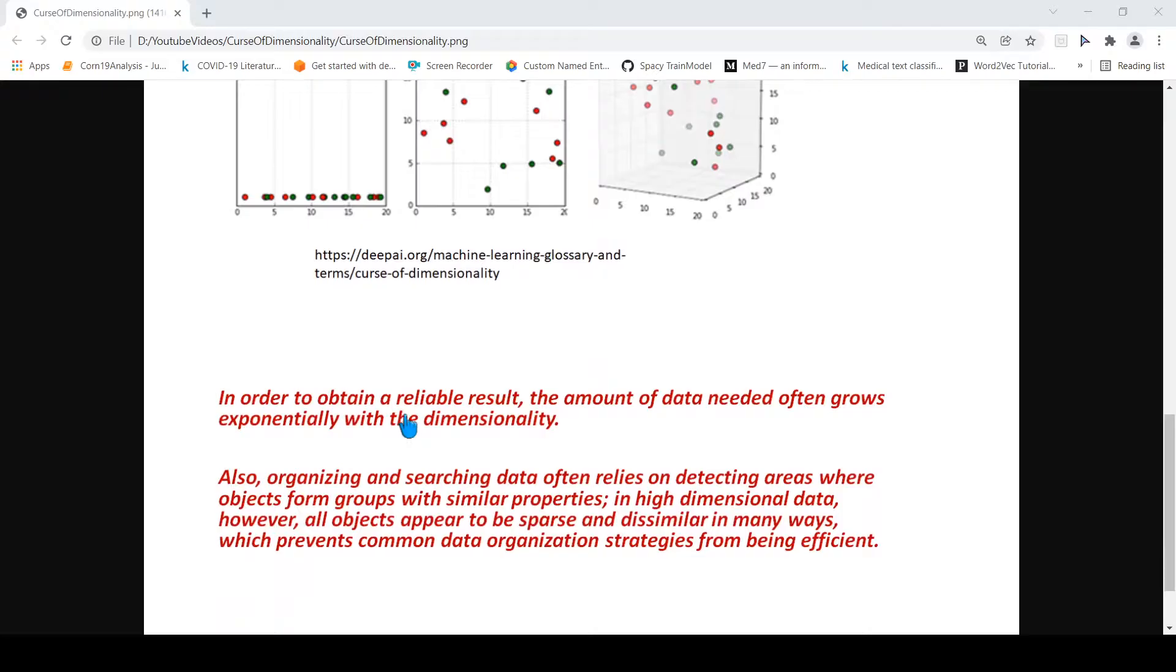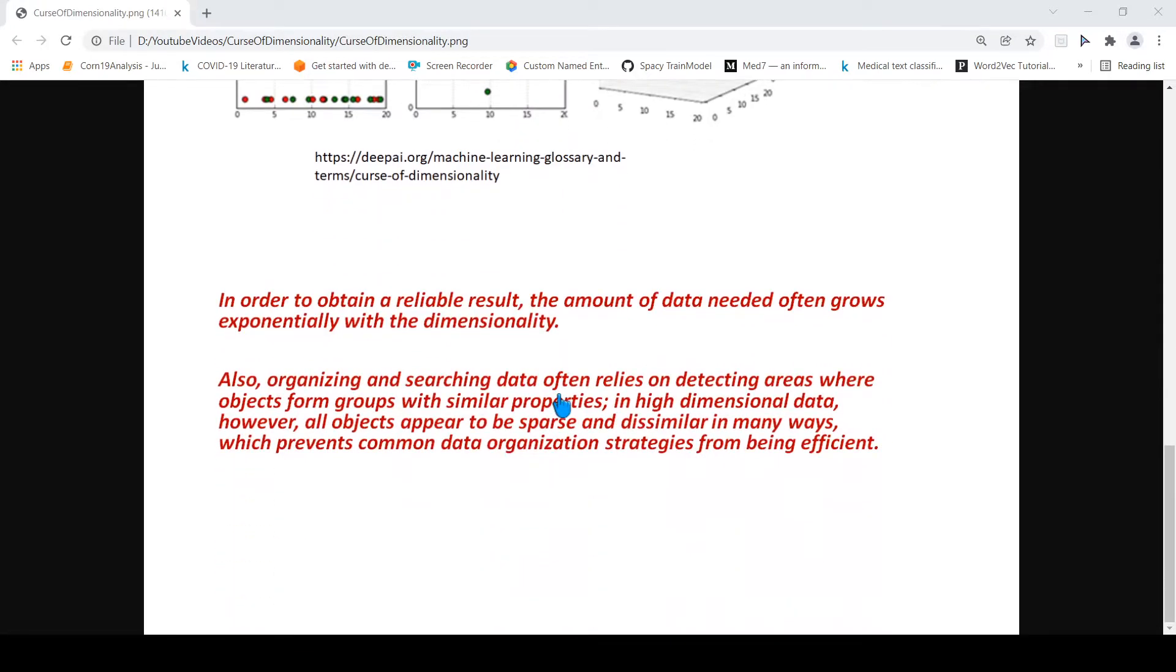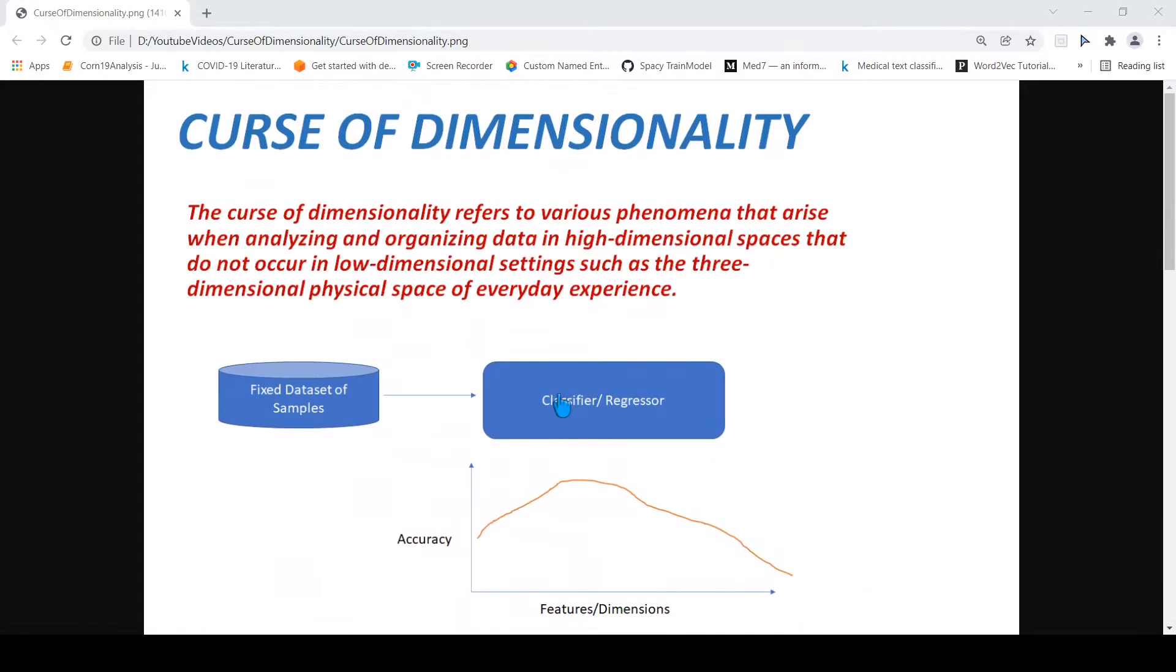But what happens is that in order to obtain a reliable result, the amount of data needed often grows exponentially with the dimensionality. So as the dimension increases, you also need an exponential increase in your data. So this is actually the curse of dimensionality with respect to machine learning.